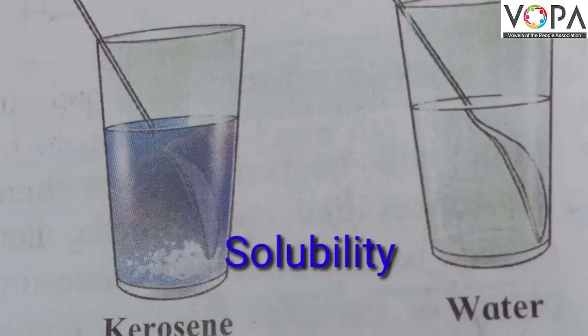Sixth property is solubility. Look at this experiment. Some solid substances dissolve in a particular liquid. Look at this sugar dissolved in water. The property of a substance getting dissolved is called its solubility.